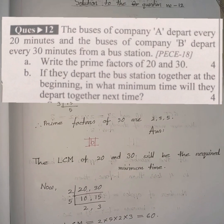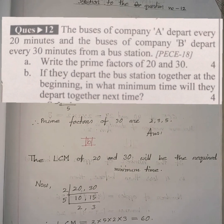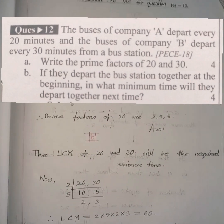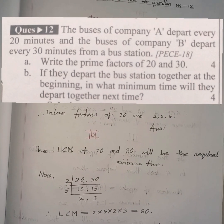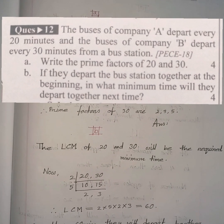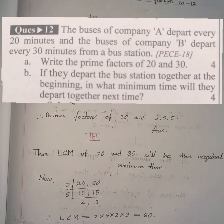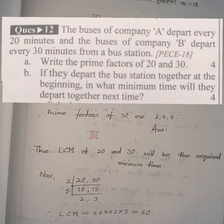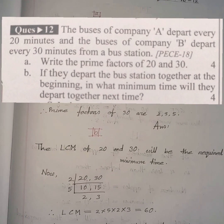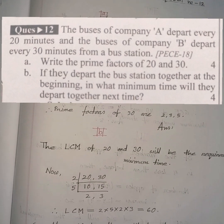The question is: the buses of company A depart every 20 minutes and the buses of company B depart every 30 minutes from a bus station. Question A: write the prime factors of 20 and 30. And question B: if they depart the bus station together at the beginning, in what minimum time will they depart together next time?